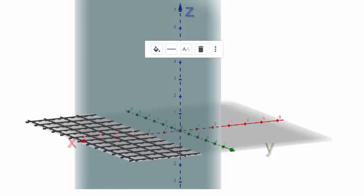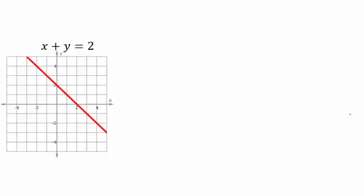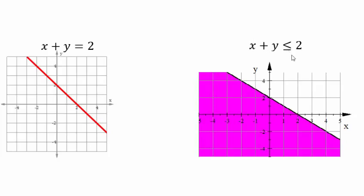You can see how in different dimensions, solutions mean different things. For equations in two variables, x plus y equals 2 represents a straight line with x and y intercepts at 2, and all points on that line are solutions. If you make it an inequality, say x plus y less than or equal to 2, then the line is the equal-to part, and all points underneath the line are solutions to the inequality in two dimensions.